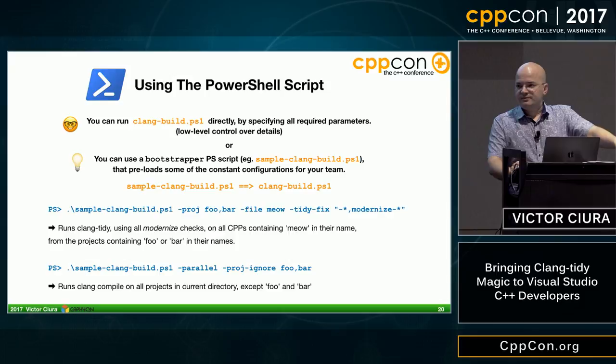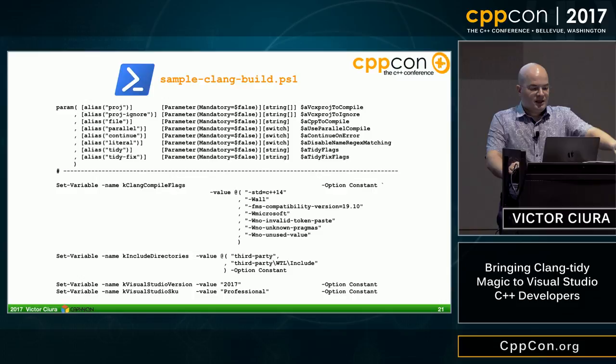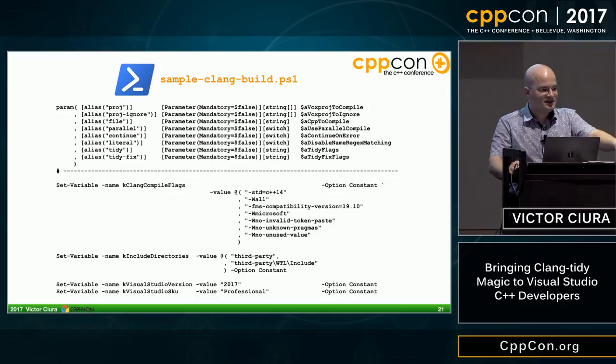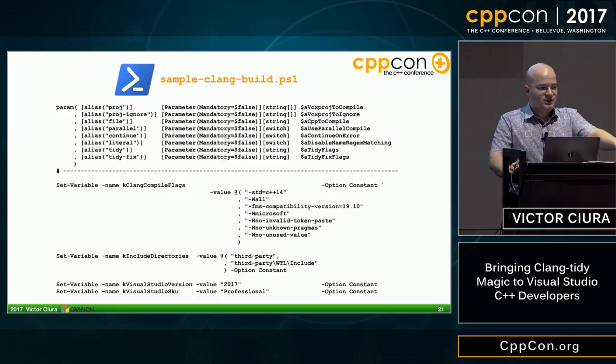In the bootstrapper script you can define constants specific to your project needs: your combination of Clang flags, additional specific include directories, Visual Studio versioning information, and so on. Your mileage may vary — not everybody can use the same configuration flags.